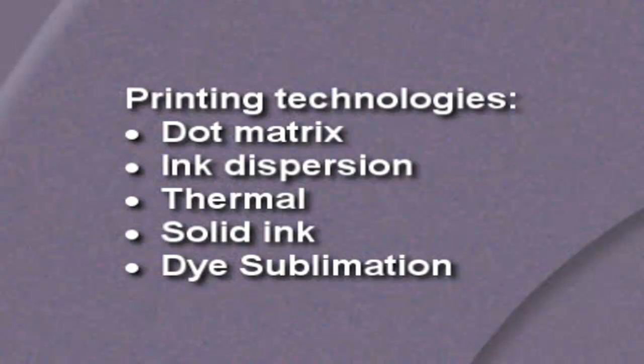The nice thing about dye sublimation printers is the fact that they create a gentle gradation. Instead of having distinct dots of particular colors, it creates a gentle gradation between colors, making photographs look like regular photographs. In this lesson, we talked about five different printing technologies: dot matrix, ink dispersion, thermal, solid ink, and dye sublimation. There's one other type of printing technology that you need to be familiar with — it's widely implemented and very popular. That's the laser printer.